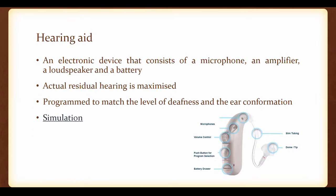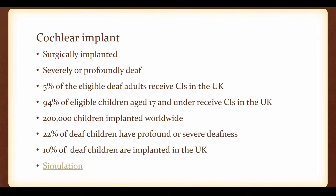The devices that deaf and hard of hearing people may be using are the hearing aid, which works similarly to an amplifier — whatever residual hearing the person has is amplified, providing more access to sound. When we talk about cochlear implants, this has been done through surgery. Generally, people who are eligible are the severely or profoundly deaf, not those with mild or moderate deafness, because they have more residual hearing and the cochlear implant basically destroys that residual hearing.